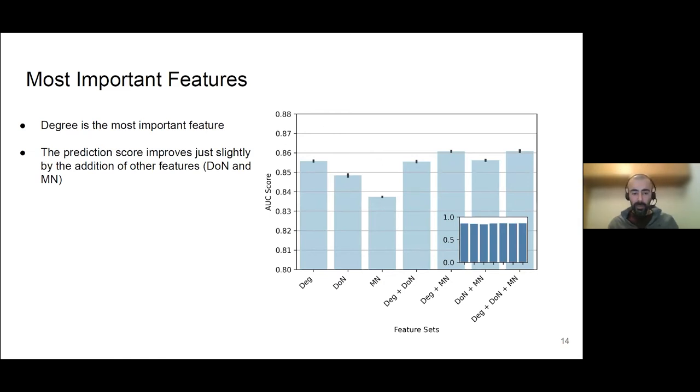Most important features, spoiler alert. The most important feature is degree, obviously. I have experimented on different combinations. So degree, after that degree of neighbors on its own is the most important and the mutual neighbors. But interestingly, the combinations are different. So you might expect that degree and degree of neighbors give you the best performance. But in fact, these two give you a better performance. And actually using all features improved the performance slightly. So it's really better to use only degree or degree and mutual neighbors.